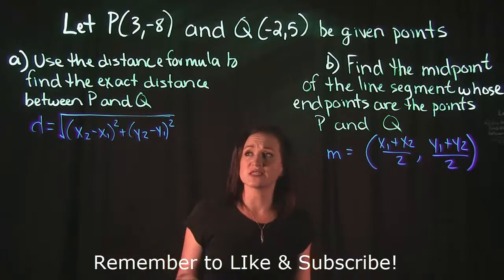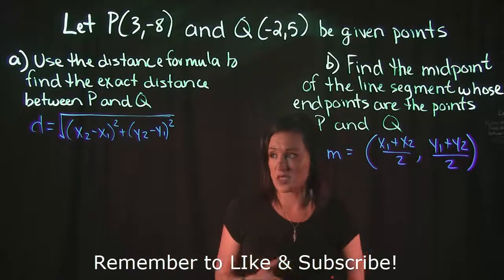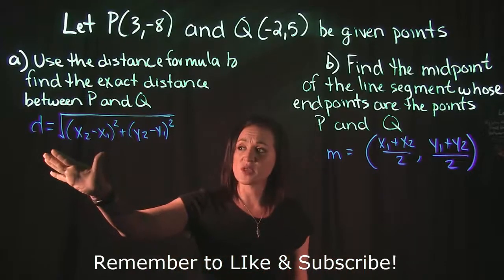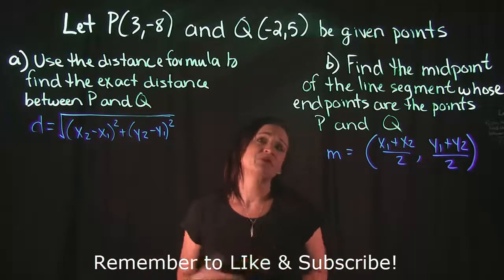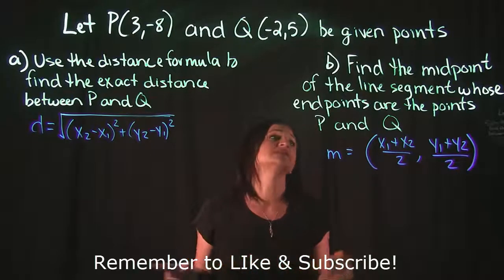For part A, we're going to use the distance formula to find the exact distance between P and Q. I have the distance formula right here. For part B, we're going to find the midpoint of the line segment whose endpoints are P and Q.